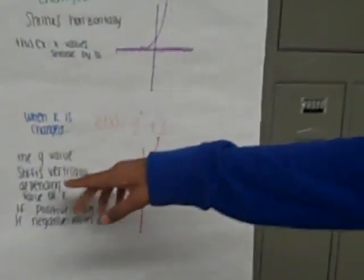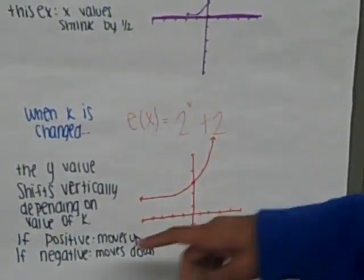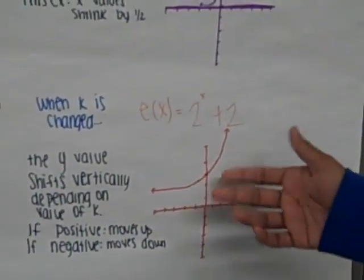Finally, when k is changed, the y value shifts vertically depending on the value of k. So if it's positive, the graph moves up. If it's negative, it'll move down. And we used plus 2 for this example.